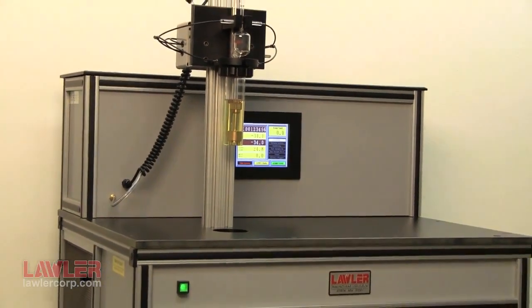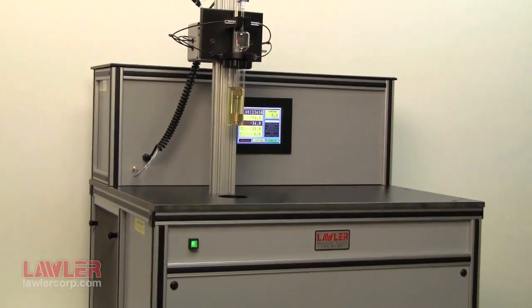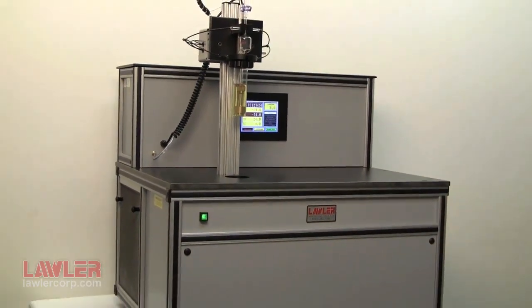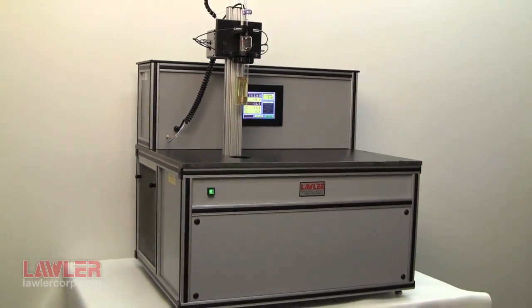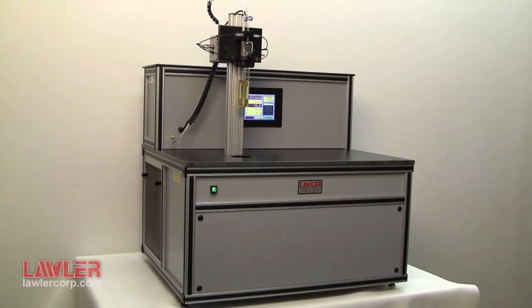Lawler units automate the manual method and so use the same sample volume, glassware, accessories, and procedures. Therefore proper operation can be verified visually.